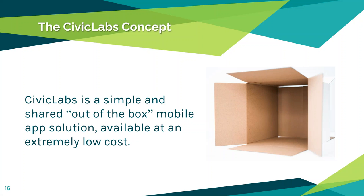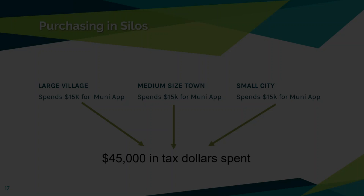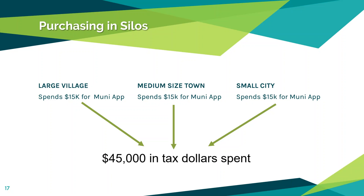The model we hatched is something we hope will save thousands of tax dollars across the province as local governments and First Nations adopt it. It's a simple, shared, out-of-the-box mobile app solution available at an extremely low cost. Previously, three different local governments — a large village, a medium-sized town, and a small city — each spending $15,000 independently on similar apps would collectively spend $45,000 in tax dollars. That's the problem with purchasing in silos.